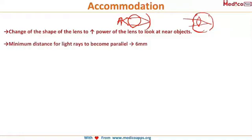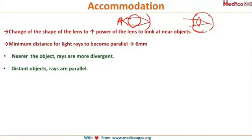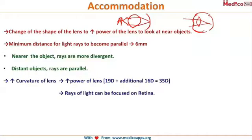The minimum distance for light rays to become parallel is 6 meters, so nearer objects produce more divergent rays while distant objects produce parallel rays. The increase in curvature of the lens adds another 16 diopters to the already existing 19 diopters, making the power of the lens alone 35 diopters, so the rays become focused on the retina.